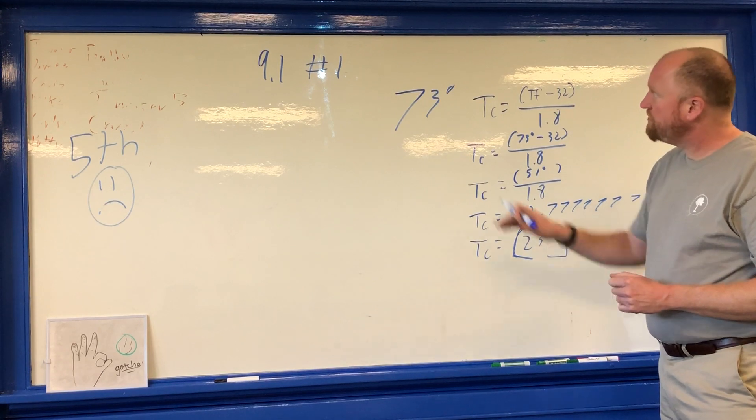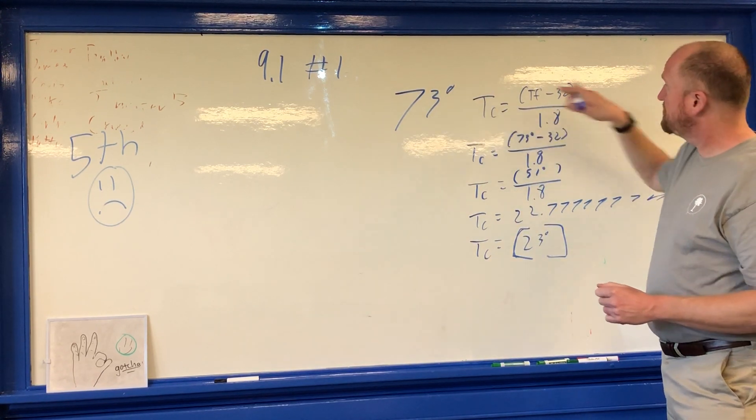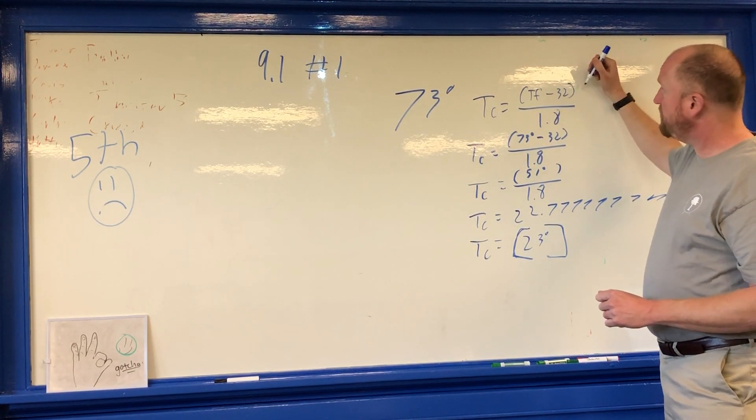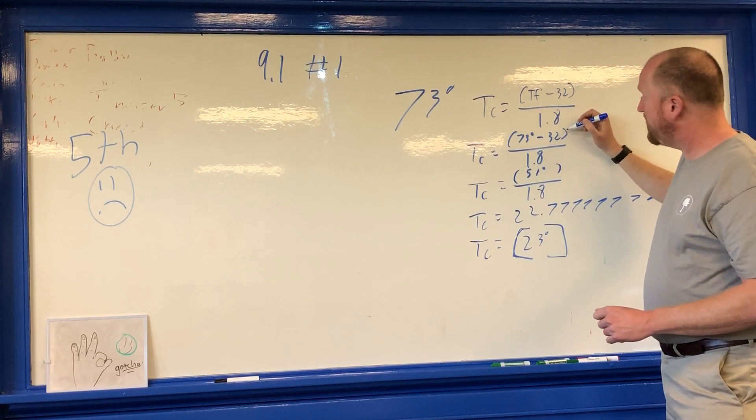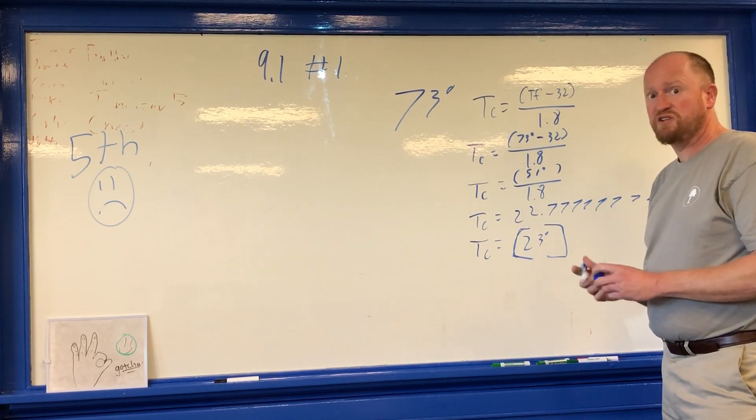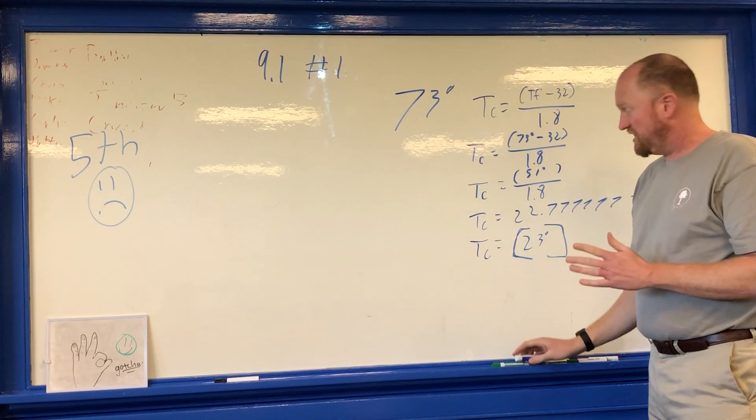So that's how you convert Fahrenheit to Celsius. Subtract 32, divide by 1.8, and you get your answer. Now, by the way, just a little number sense thing.